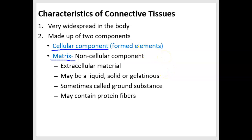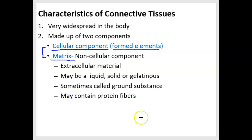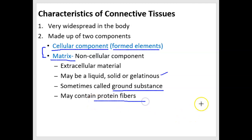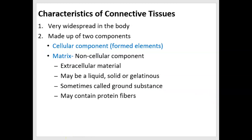Sometimes instead of seeing cellular component, you'll see the term formed elements. That's just because there's a certain type of pseudo cell in blood called a platelet. It's a formed element, but it's not a true cell. So there's a cellular component and a matrix component in all connective tissues. This matrix exists in between cells. It can be a liquid or a solid. In bone and in cartilage, we call that matrix ground substance. And sometimes we'll see protein fibers in the matrix.